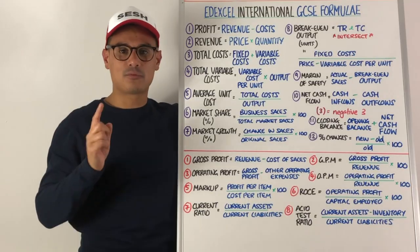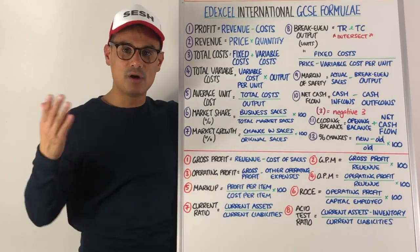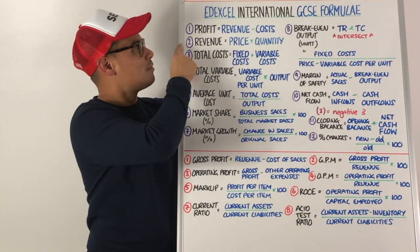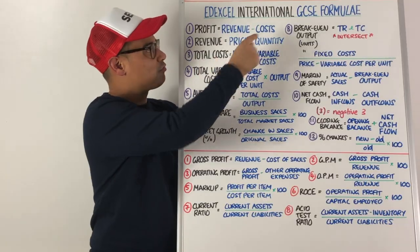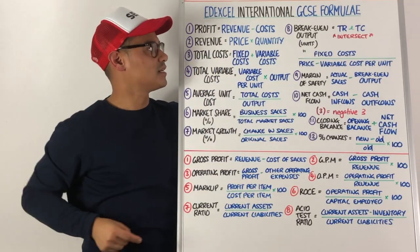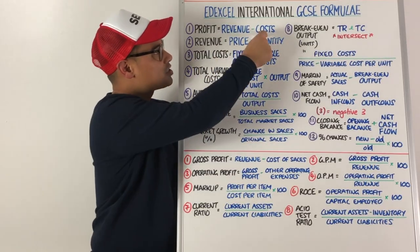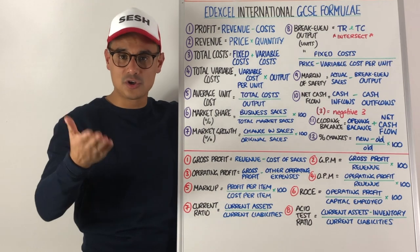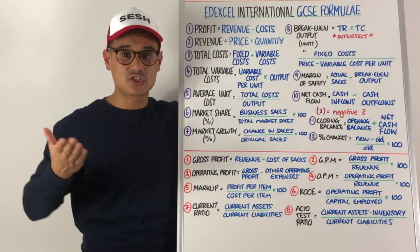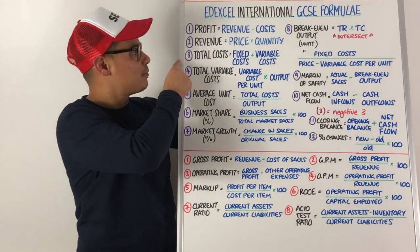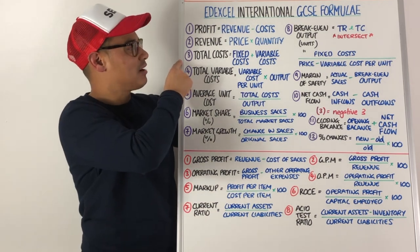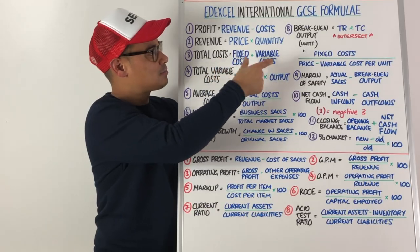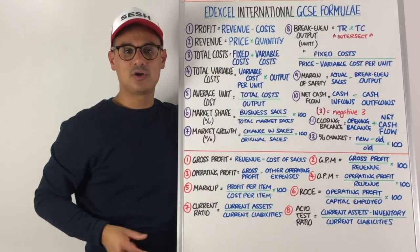First is profit. Profit equals revenue minus costs, but you might need to calculate the revenue — remember revenue is just price times quantity. The costs part of the formula is the same as total costs, number three, and if you need to calculate that, total cost is fixed costs plus variable costs.